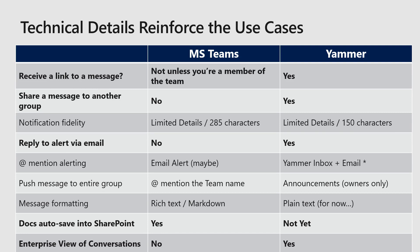A good example might be a leadership corner or 'Ask the Executives' group in Yammer. Your executives probably aren't hanging out in Yammer all day, but if you're the community manager of that group, you'll see a question has been asked and you know the right executive to ping. You send them an email saying, 'Hey, you need to respond.' It's easy for them to click on that link and jump into the conversation in Yammer.